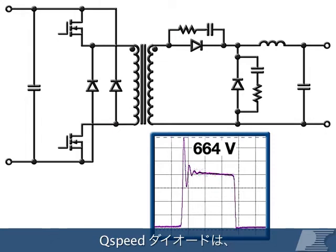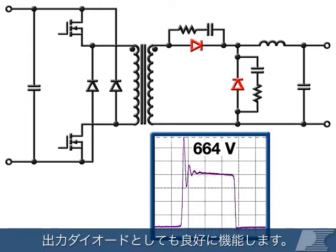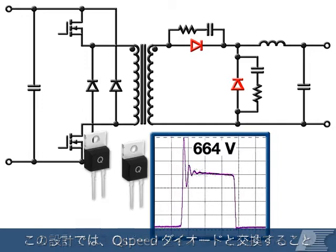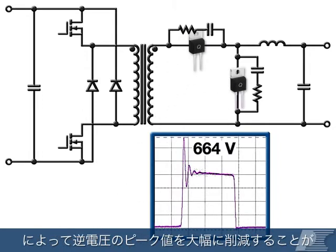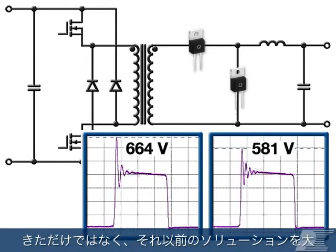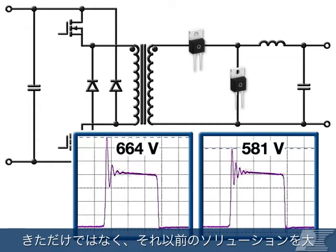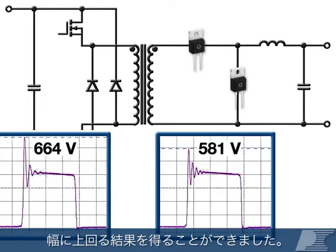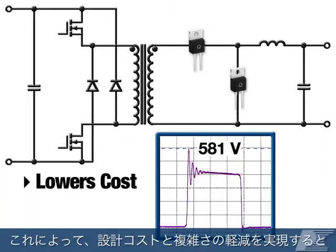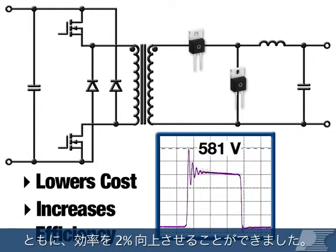Q-Speed diodes also work well as output diodes. In this design, swapping in Q-Speed diodes reduced peak inverse voltage so much, the designers were able to completely remove the snubber circuits and still outperform the previous solution. This lowered design cost and complexity while increasing efficiency by 2%.